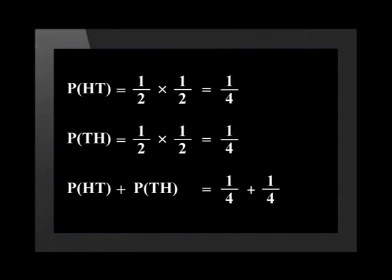Since there are two possible ways of getting our desired results, we add the two possibilities. This is equal to one quarter plus one quarter, which equals half.